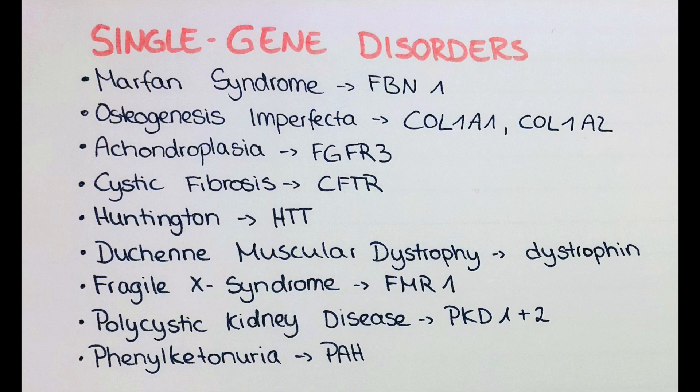The next disorder is Achondroplasia. Its primary feature is dwarfism, and there is a mutation in the FGFR3 gene — the fibroblast growth factor receptor 3. This results in an overactivity of the protein it codes for, leading those individuals to present with short arms and legs, a big head, and an average height of 131 cm in men and 123 cm in women.